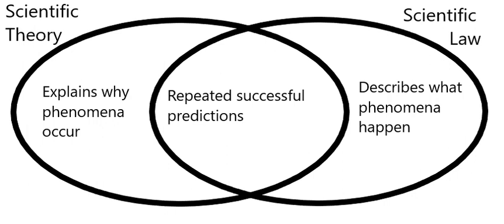Like theories and hypotheses, laws make predictions—specifically, they predict that new observations will conform to the law, and can be falsified if they are found in contradiction with new data.